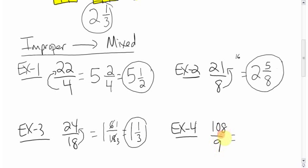This one here, 9 goes into 108. I'll have to figure this out, but you know, 9 times 10 you know is 90. How much left over? Well, 18.